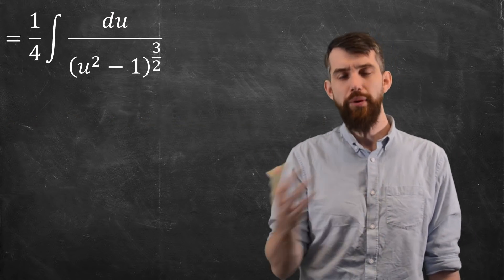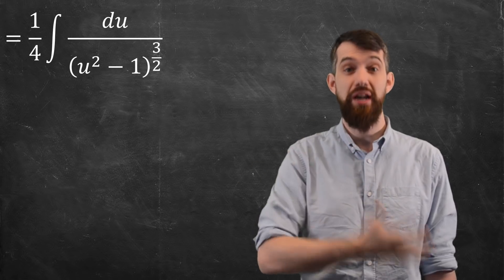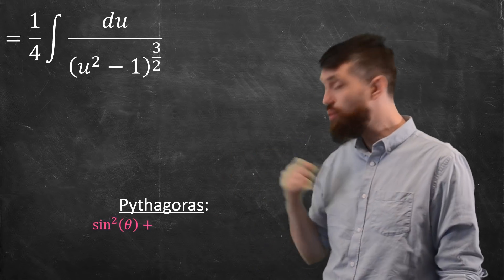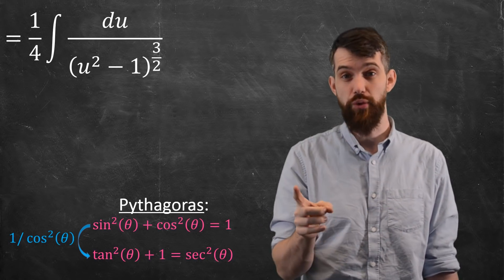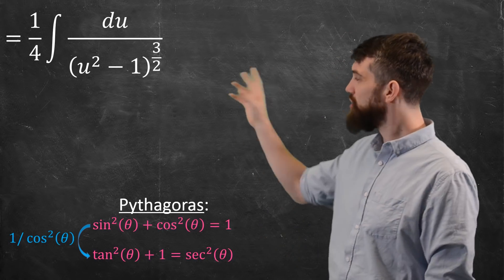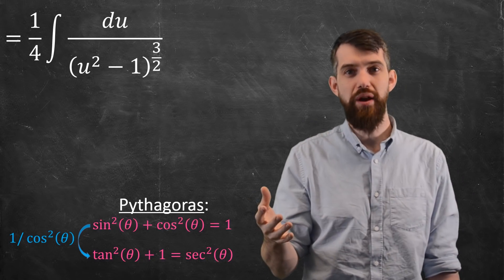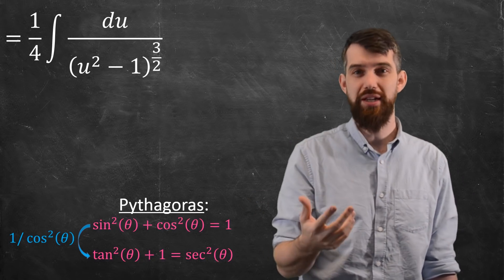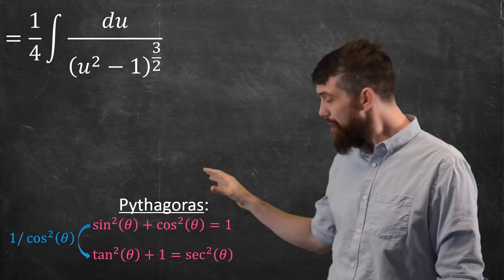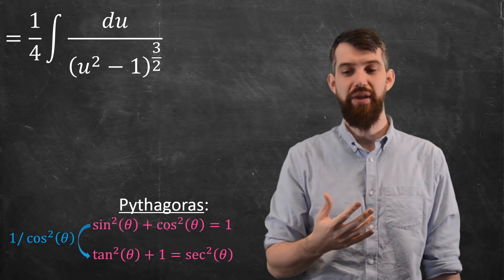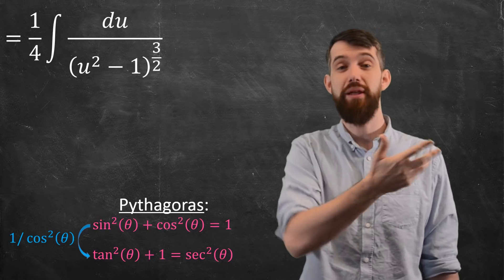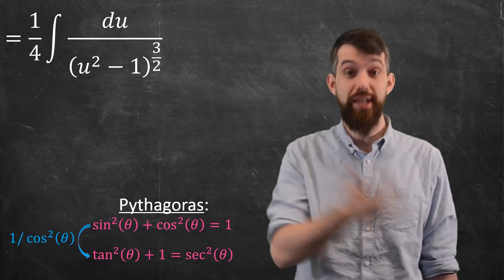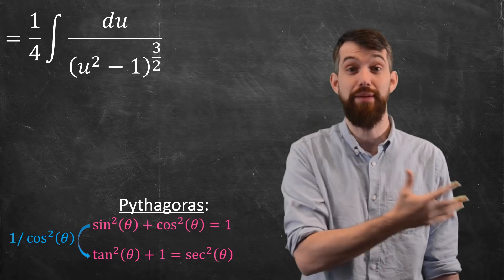Things like u squared minus one are screaming to have a trig substitution. Which one makes sense if we just focus on this particular integral? You might recall that we have these different Pythagorean identities. There was the sine squared plus cosine squared equals one. You could divide out by cosine squared and get tan squared plus one is secant squared. Because my integrand here is a u squared minus one, it's something squared minus one, I think the bottom of the two identities makes more sense. Because you can take the one to the other side, you get secant squared minus one, you can replace it all with tan squared. So let's do secant.